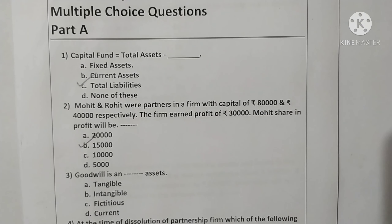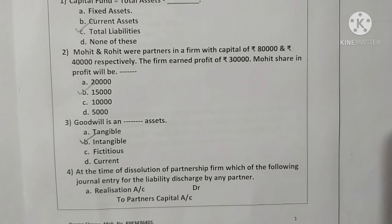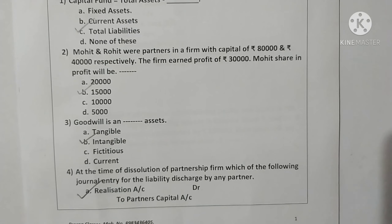Question three: Goodwill is an intangible asset. Here option B is correct. Question four: at the time of dissolution of a partnership firm, the journal entry for a liability taken over by any partner is a debit to that partner's capital account. Here option A is correct.